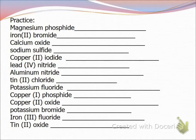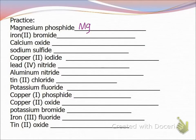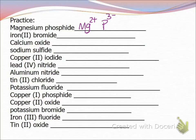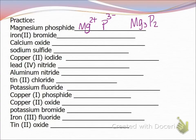Let's practice. Write the charges down first. Magnesium is a group 2 metal so its ion is 2+. Phosphide is in group 15; it needs three valence electrons so it's 3−. To make the compound electrically neutral, I need a total charge of +6 and −6, so I need three magnesium and two phosphorus: Mg₃P₂.